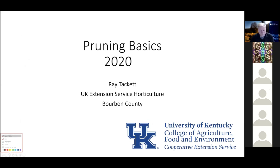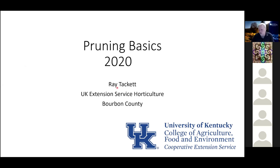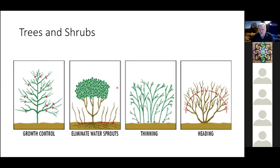Thank you for joining us this afternoon. Today we're going to talk about how I break down pruning in the landscape primarily. There's also pruning in the orchard, which is much more specialized. I'll touch on it occasionally, but primarily I'll talk about landscape and ornamental plants — plants grown for foliage and plants pruned based on bloom. We'll start out with trees first, then go into shrubs.